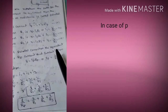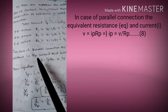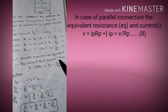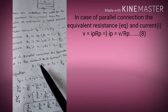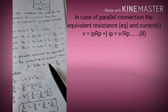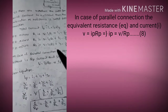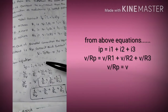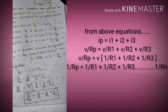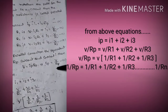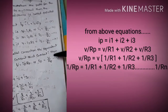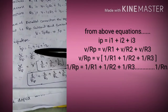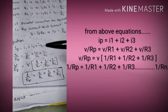For the parallel combination, the equivalent resistance is Rp. If the total current is ip, then V = ip × Rp, which means ip = V / Rp. We know ip = i1 + i2 + i3. Substituting all expressions: V / Rp = V / R1 + V / R2 + V / R3.